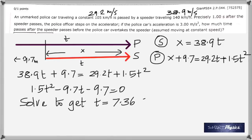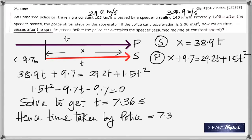You would get t is equal to 7.36 seconds. But remember that the question says how much time did this police take, so you've got to add one more second.